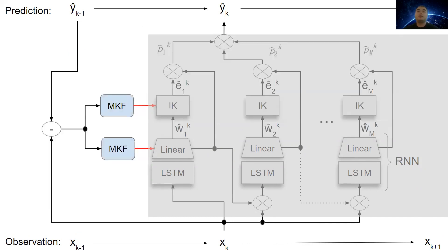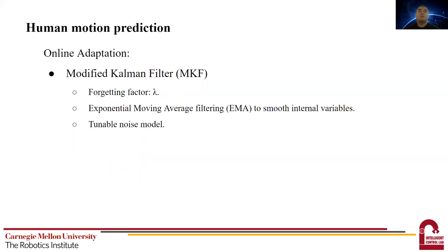And lastly, we move on to the online adaptation. We propose a modified Kalman filter for online adaptation. The adaptation system model can be written in this form. The phi is the parameters we want to adapt. In our case, it is the W matrix for the linear output layer and the A matrix in the IK.